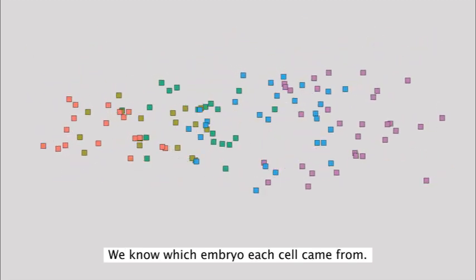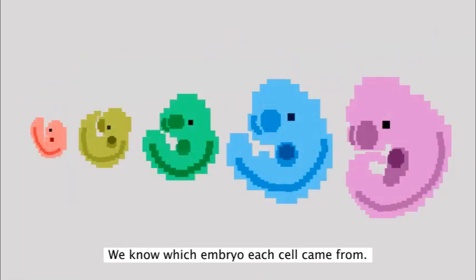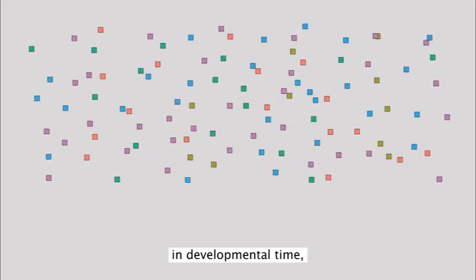We know which embryo each cell came from. We can also order cells of each type in developmental time.